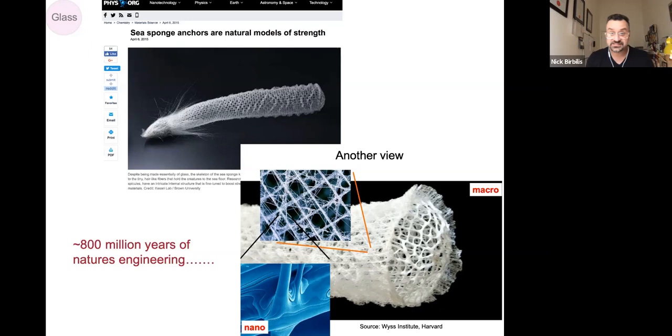They've got about an 800 million year head start, if you consider Mother Nature to be a materials designer from us, but the unique thing is that they're stronger than steel, which is remarkable, they're much lighter and they don't rust. You can see in these cool pics from the Wyss Institute at Harvard that the glass structure is actually very remarkable right down to the nano structure.